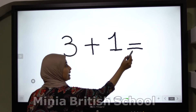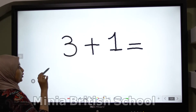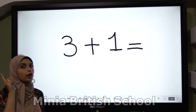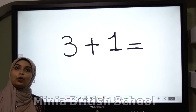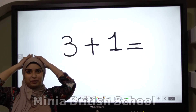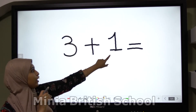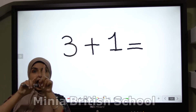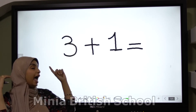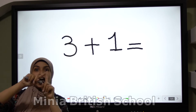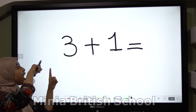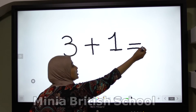All of you, KG, read with me: three plus one equals. Okay, let's see our steps. First, what is the big number here - three or one? Let's think together. Excellent KG - three! Okay, first we will put the big number in my mind. So where will we put the big number? Excellent - in my mind! And the small number, one - we will put the small number in my hand.